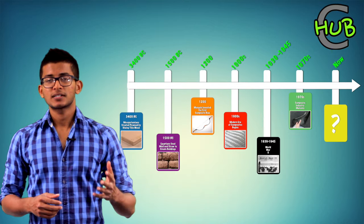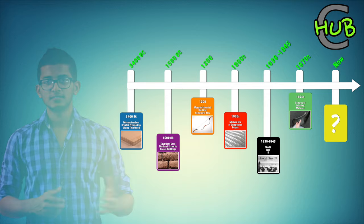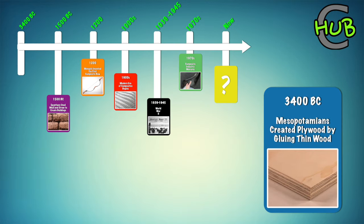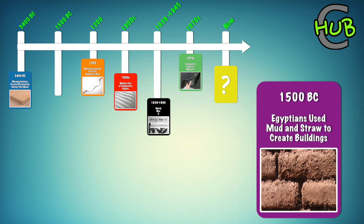You might be surprised to hear that composite materials have been around for thousands of years. Mesopotamians came up with the first man-made composite around 3400 BC, when they made plywood by sticking thin wood strips at different angles. Around 1500 BC, Egyptians used mud and straw to create strong buildings. Straw continued to provide reinforcement for ancient products such as pottery and boats.